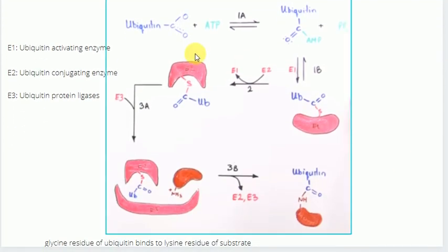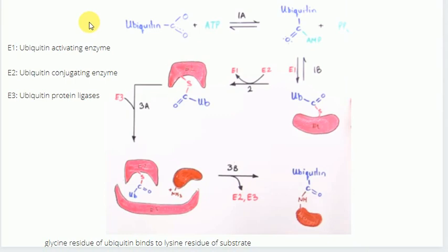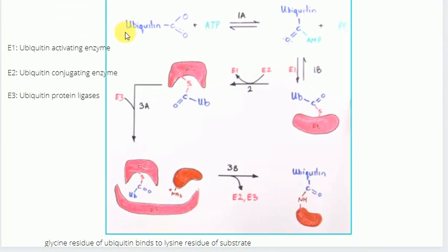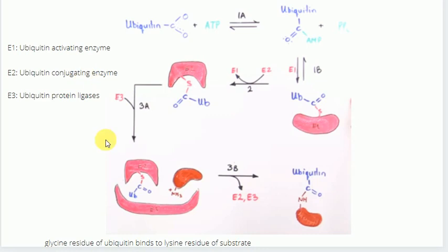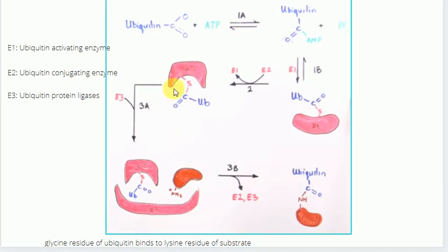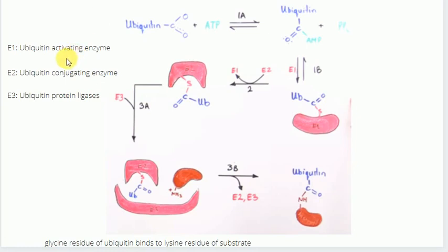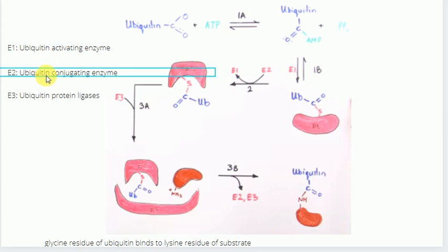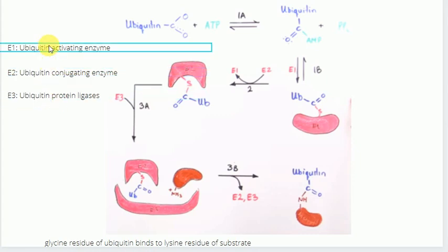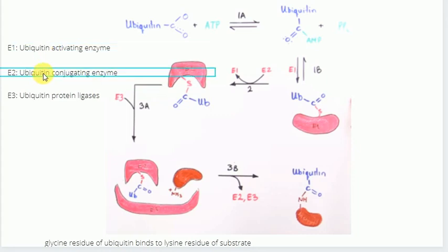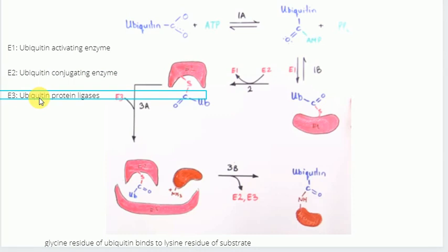Now I'm going to talk about how the process of ubiquitination occurs. The process of ubiquitination actually involves three different enzymes: E1, E2, and E3. E1 enzymes are called ubiquitin activating enzymes, E2 enzymes are called ubiquitin conjugating enzymes, and E3 enzymes are called ubiquitin protein ligases.